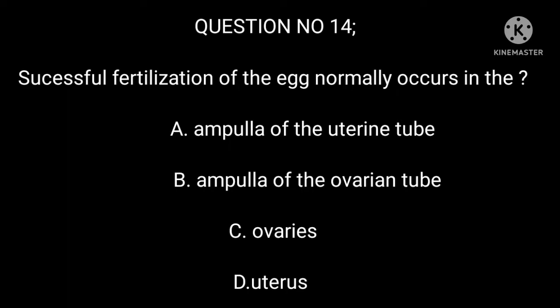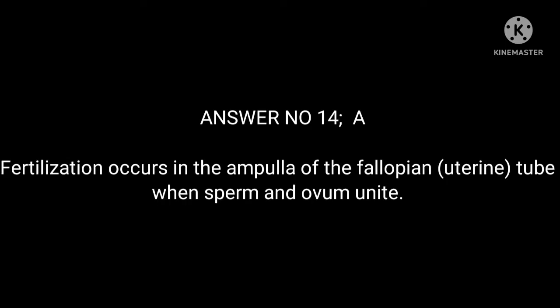Question number 14. Successful fertilization of the egg normally occurs in the: A. Ampulla of the uterine tube. B. Ampulla of the ovarian tube. C. Ovaries. D. Uterus. Answer number 14: A. Fertilization occurs in the ampulla of the fallopian/uterine tube when sperm and ovum unite.